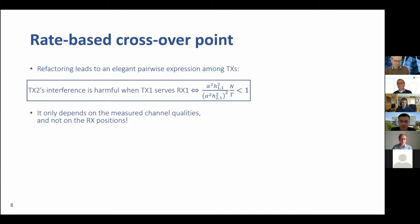Refactoring this expression leads to an elegant pairwise expression among the transmitters. Basically, we decide if we have two transmitters, when they can operate at the same time and when they should not. I would like to emphasize that this expression only depends on measurable quantities. The H are the channel qualities, alpha is a constant, N is our noise power, and gamma is an implementation gap which can also be measured. These elements can be measured, so we do not need to know the receiver positions.